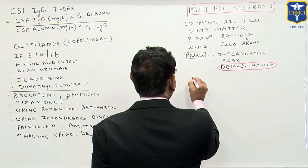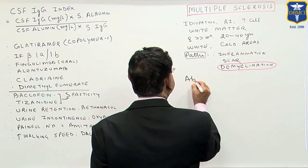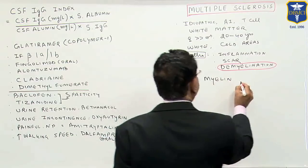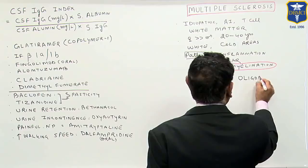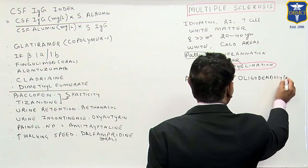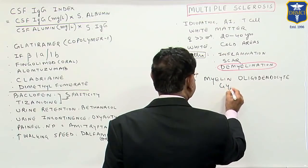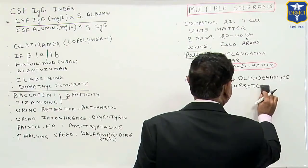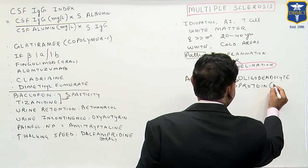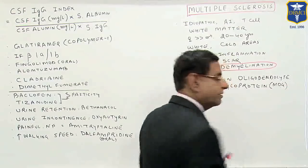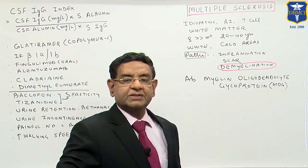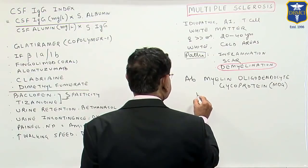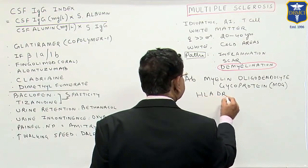In these patients, antibodies against myelin oligodendrocyte glycoprotein are present, and it is this antibody which is associated with demyelination. These patients also have HLA-DR-B1.